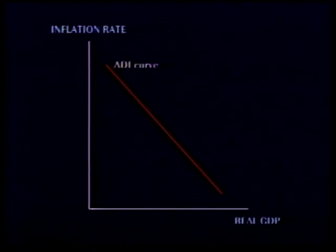This is called the ADI curve, or aggregate demand inflation curve. Note that it slopes downward, just like an ordinary demand curve.